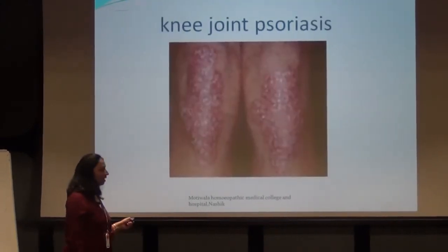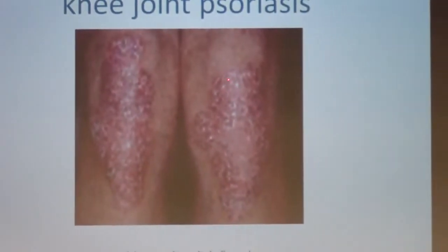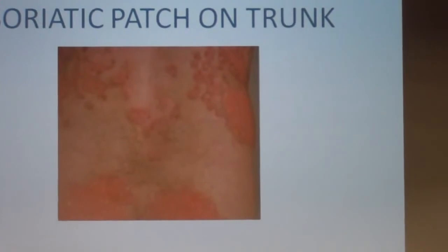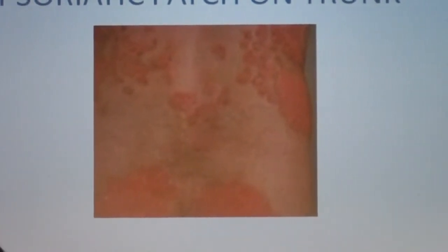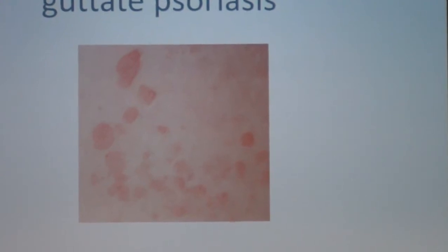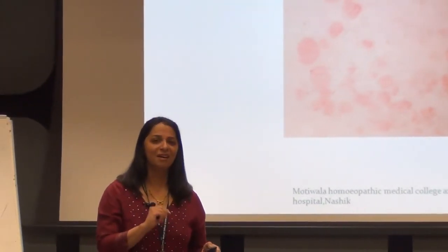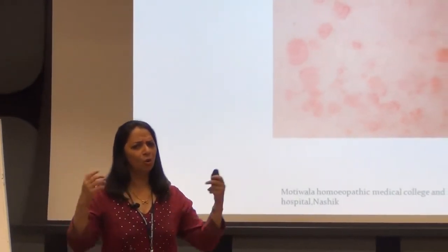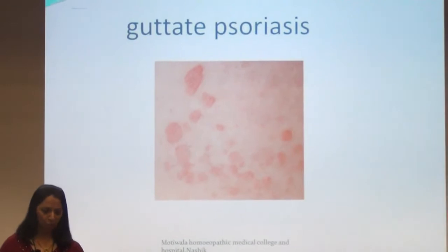This is psoriasis of the knees — do you appreciate the erythematous base with scaling? Again psoriasis of the knees, and a patch on the trunk showing maculopapular, erythematous patches. This is guttate psoriasis, a form where patches appear small — split-pea sized — called gutta. Guttate psoriasis can be a very severe form affecting the whole body with small papular lesions with scaling.